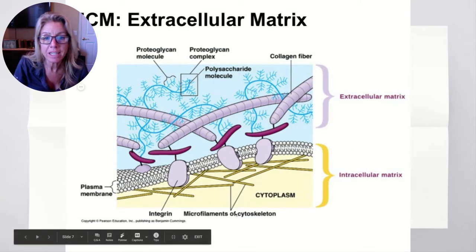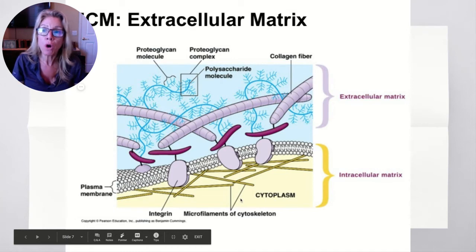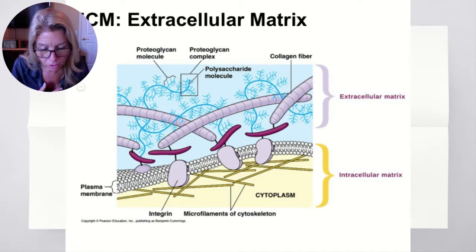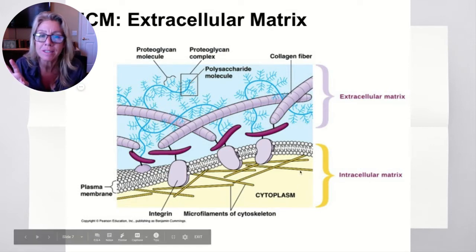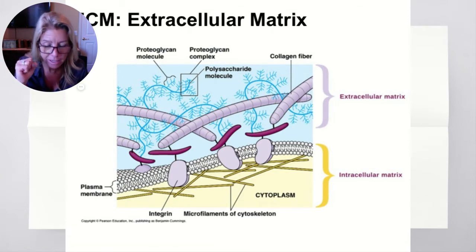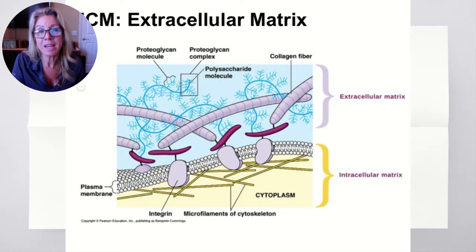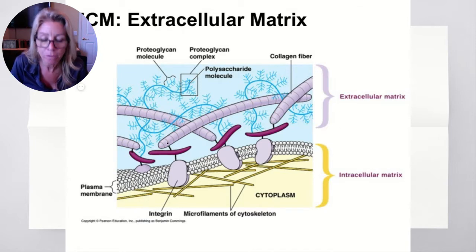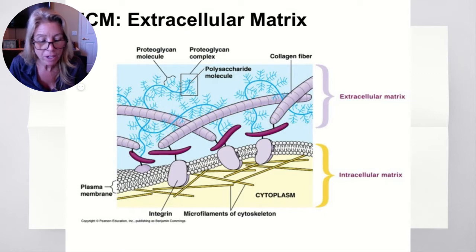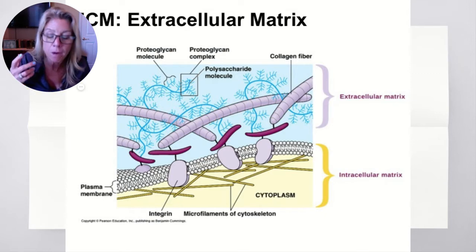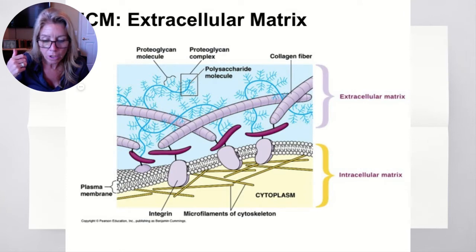This would be the intracellular matrix within. The extracellular matrix is found in animal cells only. What's outside the cell membrane on plant cells? Cell walls — exactly. So sometimes the ECM is referred to as a coat of carbohydrates rather than a rigid wall of cellulose. It contains protein fibers and the glycocalyx — a combination of glycolipids and glycoproteins.